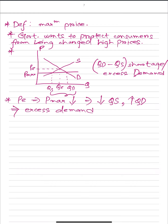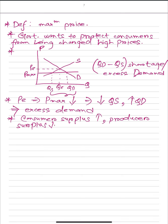Excess demand is a problem because you don't have as much as consumers demand. Another point: since price is lower and quantity demanded is higher while quantity supplied is lower, consumer surplus will increase. Consumer surplus rises because price is lower, but producer surplus decreases.